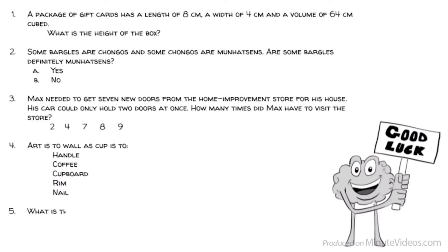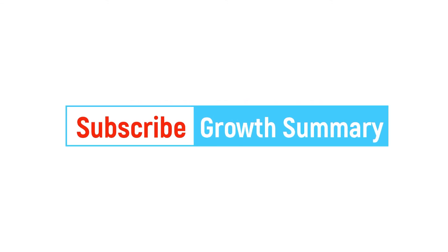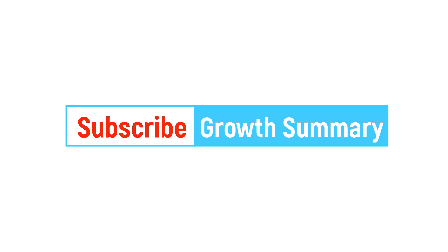5. What is the missing number in the series? 1, 16, 81, blank, 625, 1296. 18, 18, 20, 22, 22, 23?